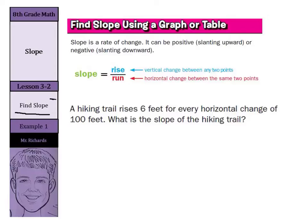Now what is slope? As it says here, slope is a rate of change which can be positive, which is slanting upward, or negative, which is slanting downward. And one thing you will hear over and over again with slope is slope equals rise over run. Now our rise is our vertical change, our up and down change, and our run is our horizontal change, our left to right change.